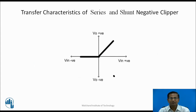Transfer characteristics are the same for both the series and shunt negative clipper. During positive half cycle, when Vin changes positively, V0 changes accordingly. During negative half cycle, when Vin changes negatively, V0 remains zero.